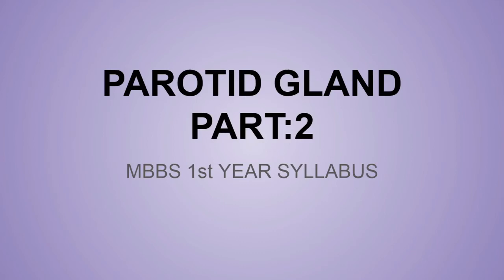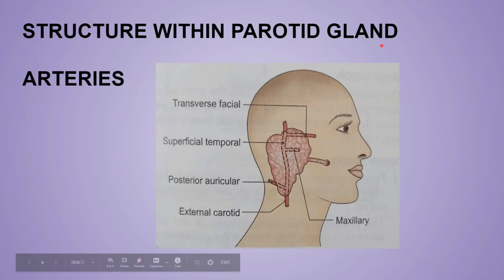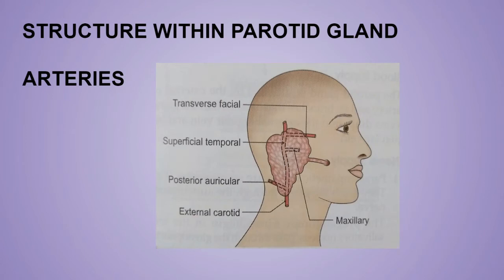Hello everyone, today we will discuss the parotid gland part 2. The structures within the parotid gland are mainly three: arteries, veins, and nerves — from the medial to the lateral side, arranged as arteries, veins, and nerves (A, V, and N).